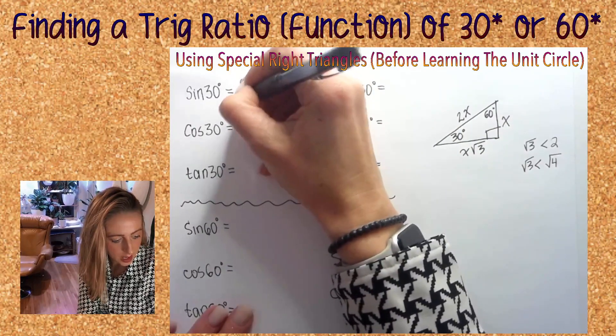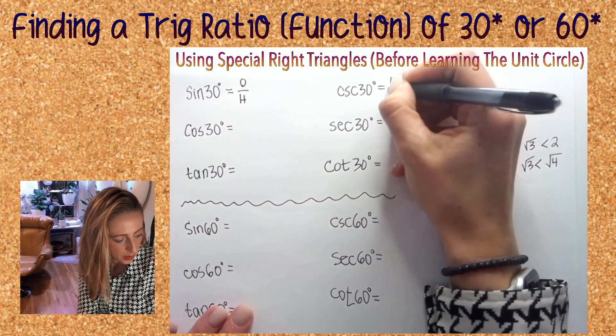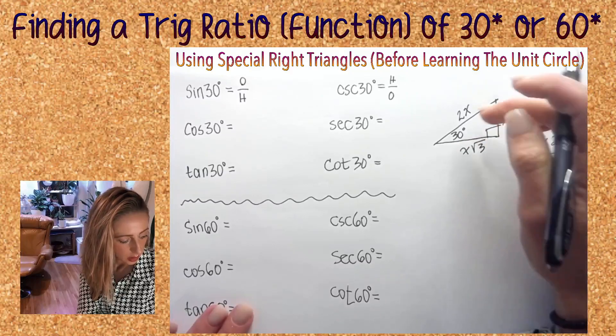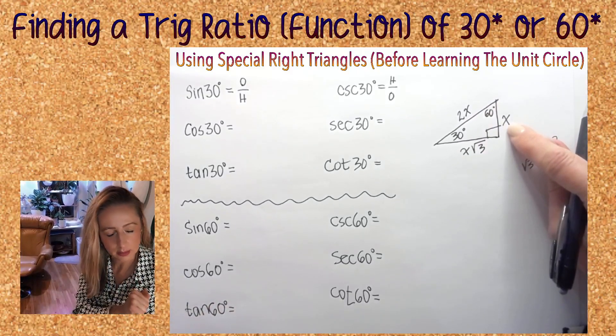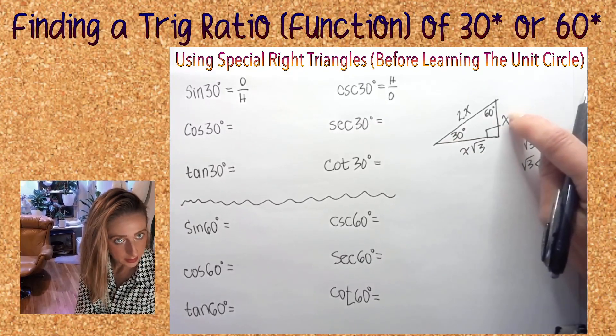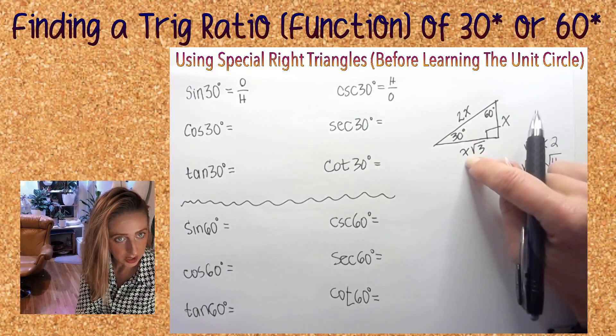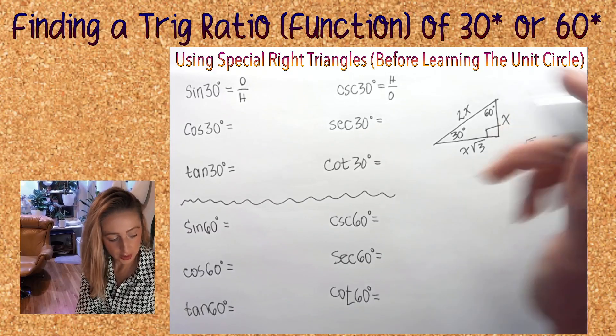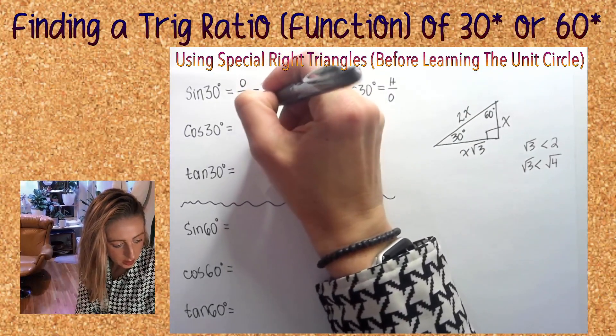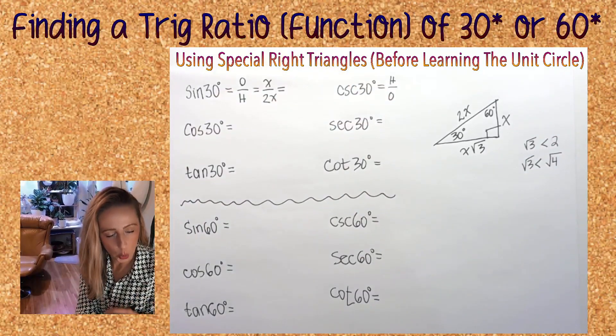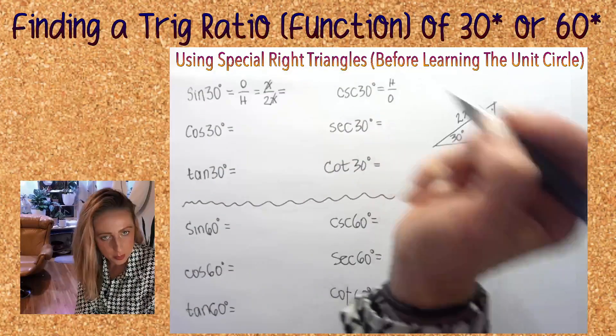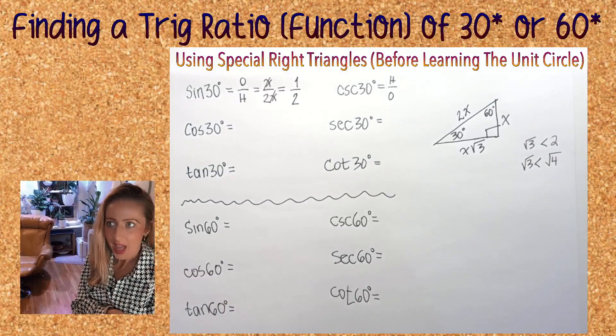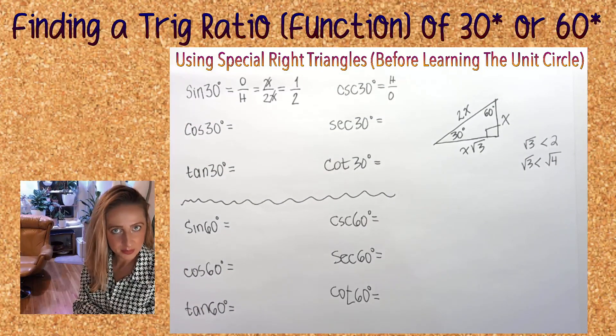Sine is opposite over hypotenuse, cosecant will be hypotenuse over opposite. If I'm doing 30 degrees, opposite from 30 is x, x root three is adjacent to 30, and 2x is the hypotenuse. So x over 2x, but we simplify always. If you knock out the x from top and bottom, what's left for your final answer is one over two.